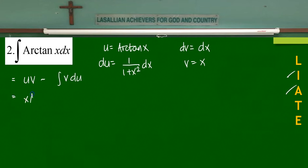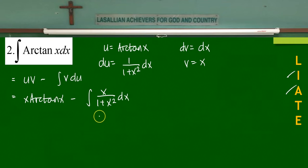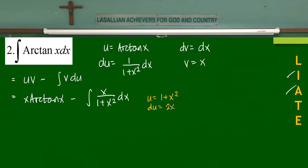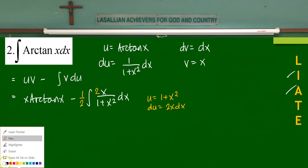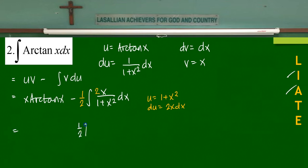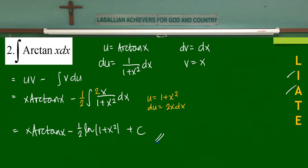Applying integration by parts — uv minus the integral of v du — we get x·arctan(x) minus the integral of x/(1+x²) dx. This second integral can be solved by simple substitution: let u = 1+x², then du = 2x dx, so we bring out one half. That integrates to (1/2)·ln(1+x²). The final answer is x·arctan(x) minus (1/2)·ln(1+x²) plus C.